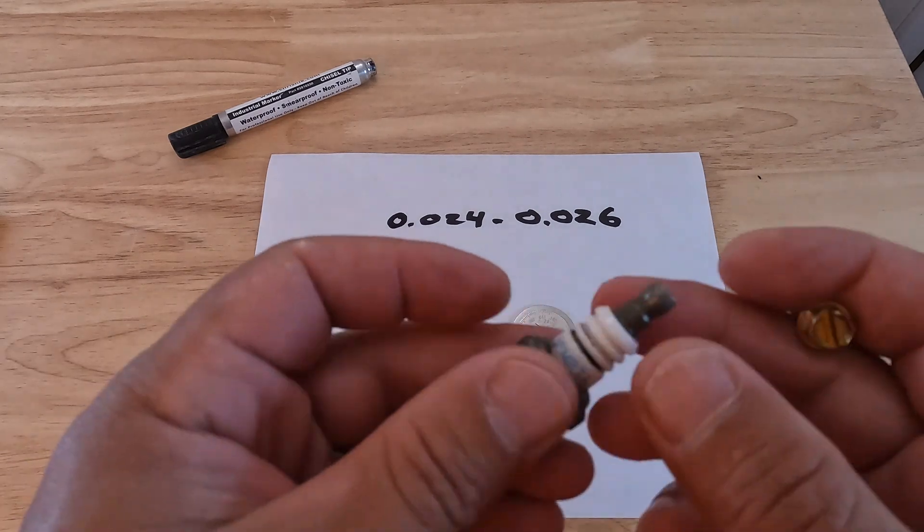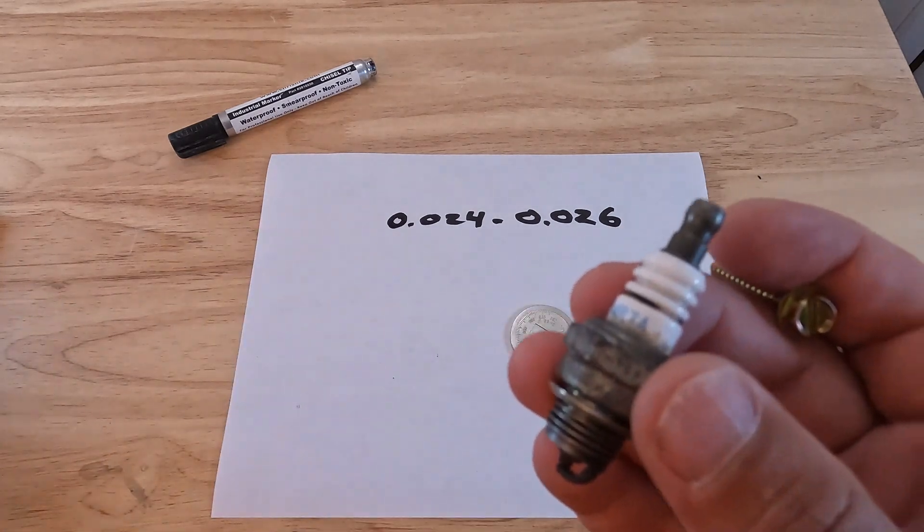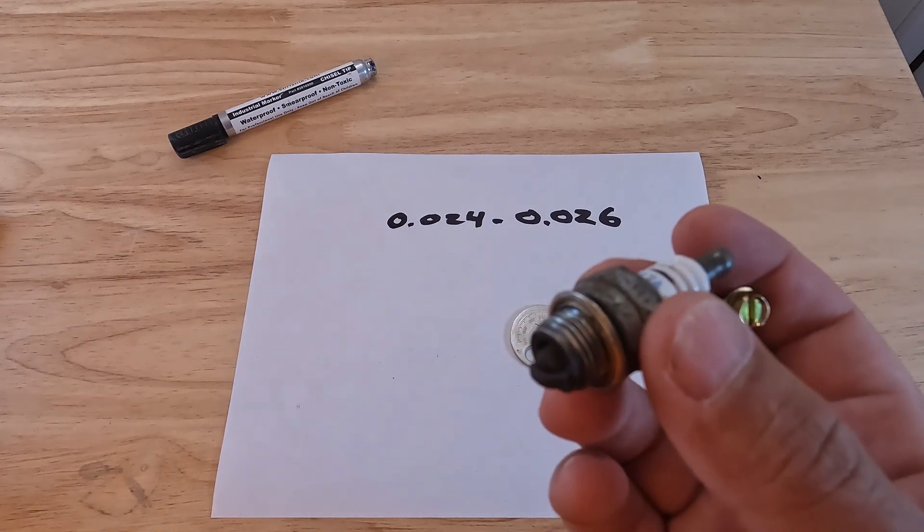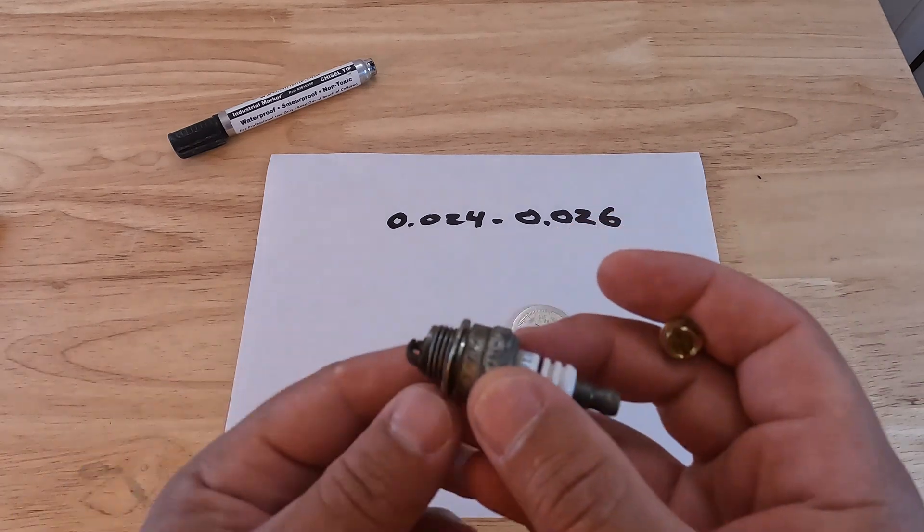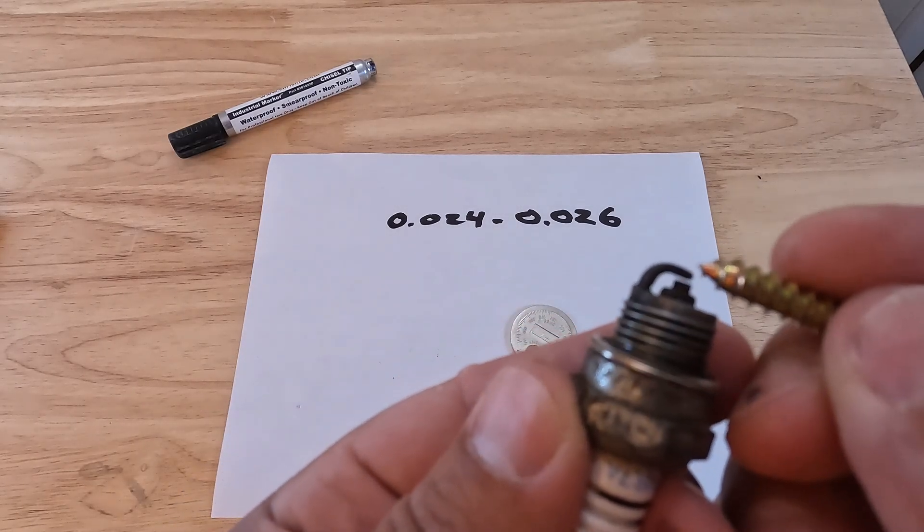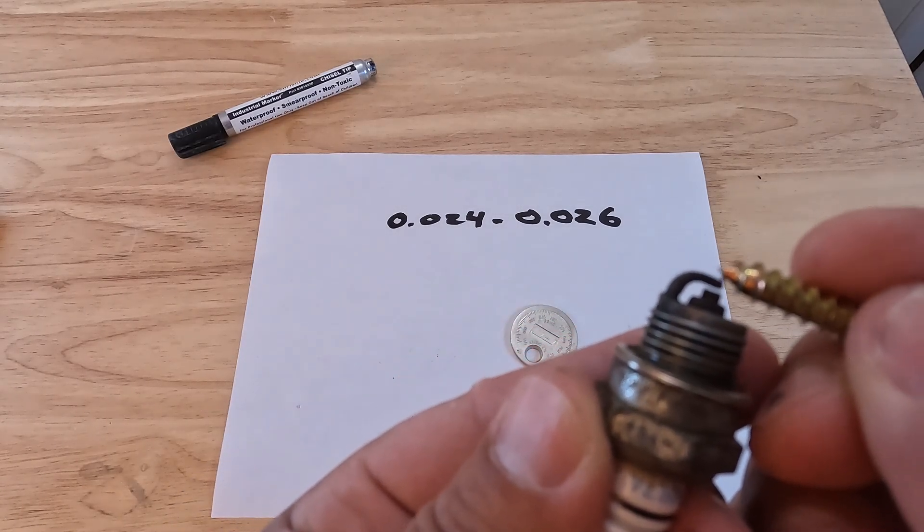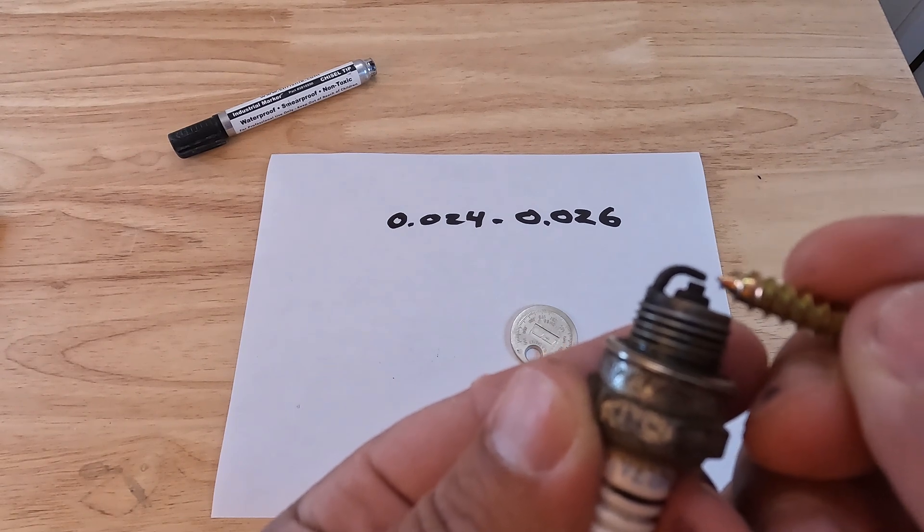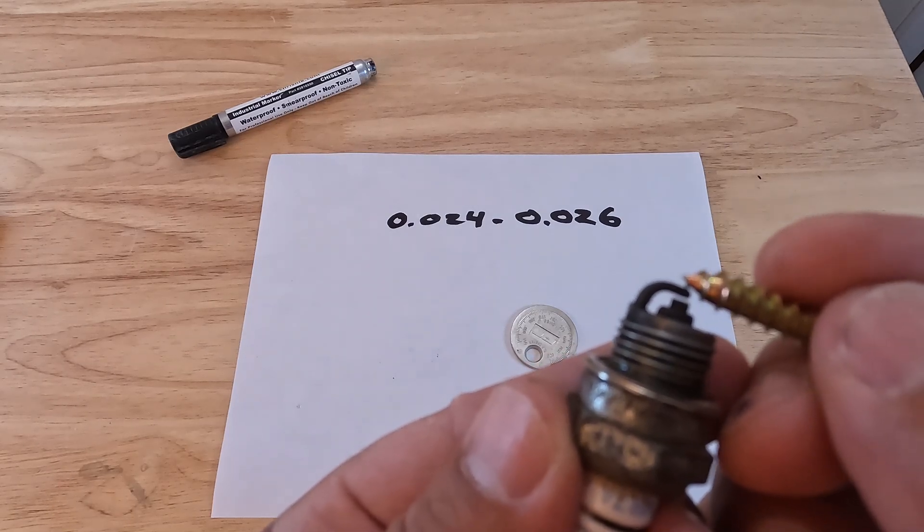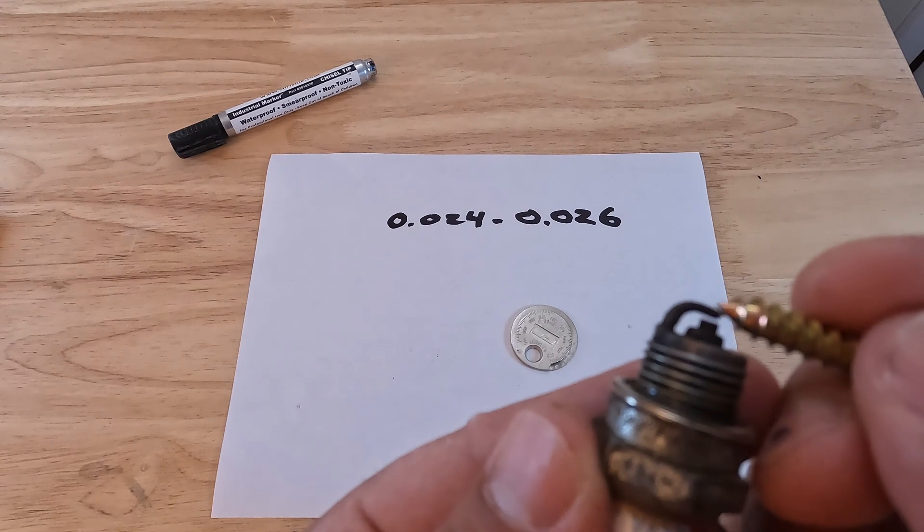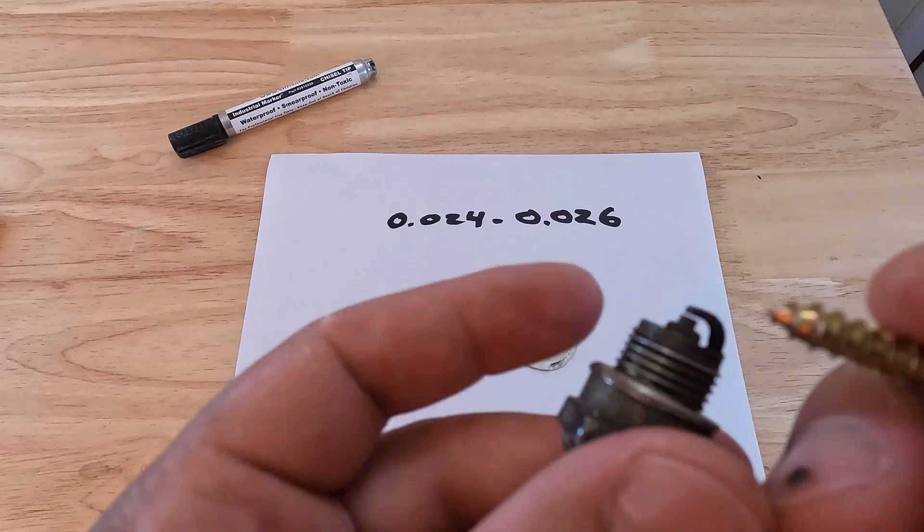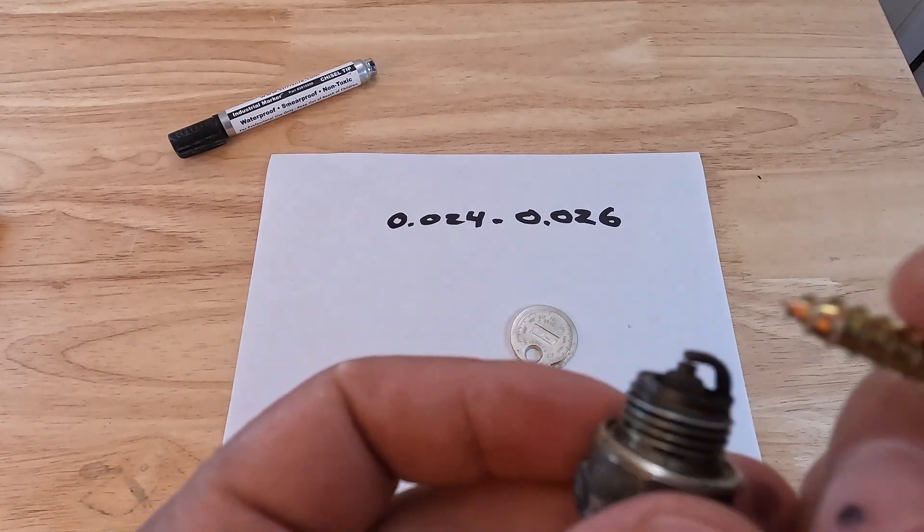Now we'll go over what can happen if your spark plug gap is too big. If you have too large of a gap, then this arc isn't going to consistently jump from this to this. When that happens, you're going to have an engine that misfires or that rough idles depending on how big that gap is. So that's going to be a big reason why your engine is misfiring.